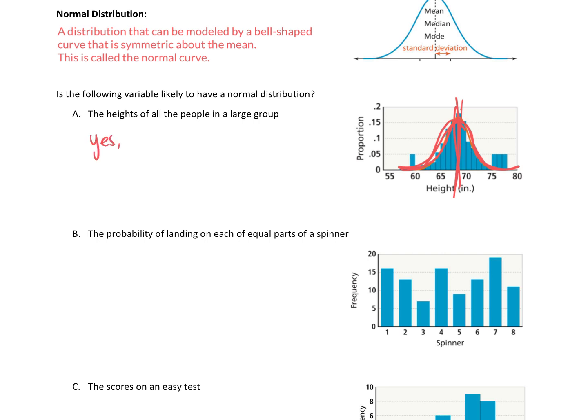So we would say yes. The heights of people in a large group are likely to be normally distributed.